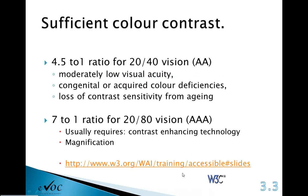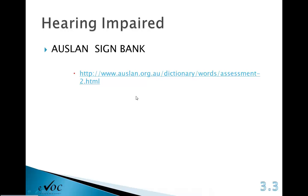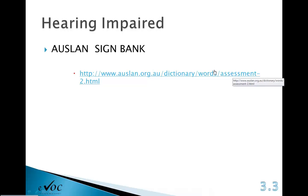There is also a link on the website for hearing impaired resources — specifically a link to Auslan, which is the Australian sign language site. Here you can look at a sign bank of different words, where there's a short film clip that signs the particular word. The example given here is the word 'assessment.' If that isn't loading well, go back to the dictionary words and enter your own word using the slash. It's a handy little link to have.